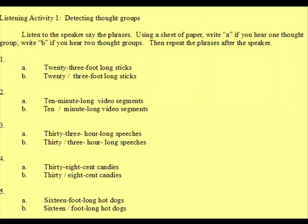Listening activity one: detecting thought groups. Listen to the speakers say the phrases. Using a sheet of paper, write A if you hear one thought group, write B if you hear two thought groups. Then repeat the phrases after the speaker.